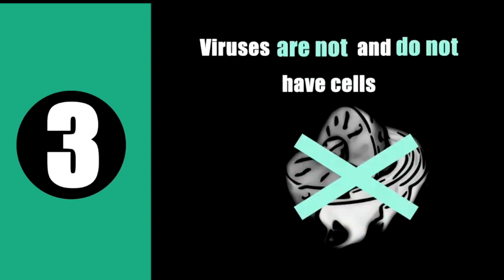Number 3. Cells are the basic units of living organisms, but viruses are not and do not have cells. Also, because of their inability to survive independently, viruses are considered non-living. However, they are more than non-living entities because of their ability to direct cellular processes. Thus, describing them as either active or inactive, rather than living or non-living, is more applicable. We can say that viruses are inactive outside a host and active only when inside.